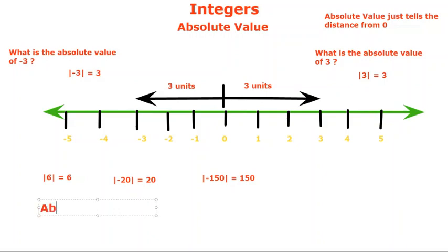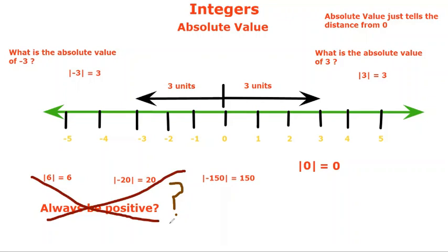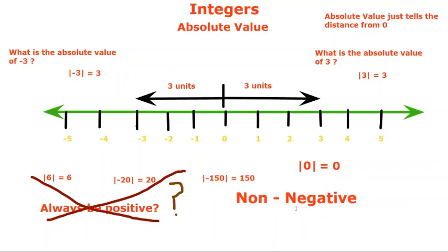So wouldn't it be right to say that the answer of absolute value will always be positive? To answer this, consider: what is the absolute value of zero? Zero is zero units away from zero, so the answer is zero. But is zero positive or negative? We cannot say either, because zero is neither positive nor negative. So it would be wrong to say the answer is always positive. Instead, we say the answer will always be non-negative — meaning always positive or zero.